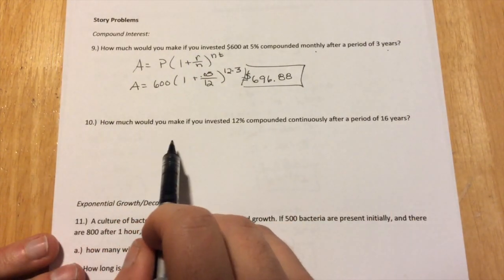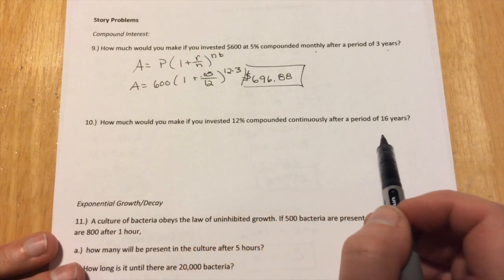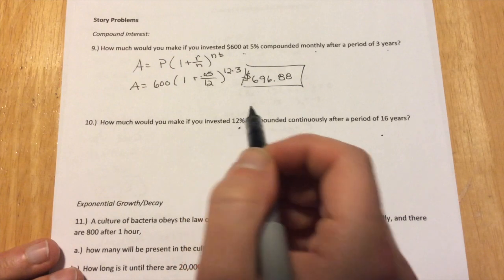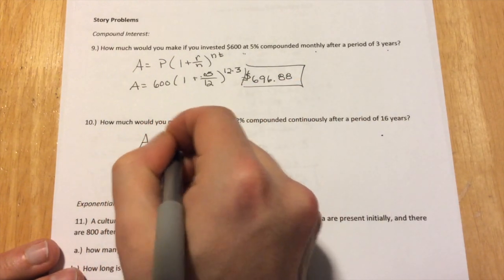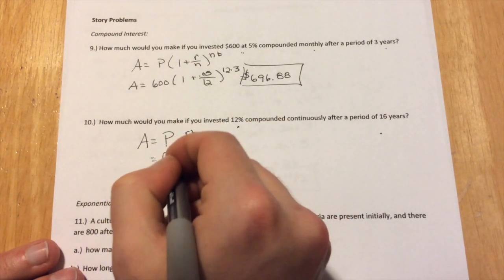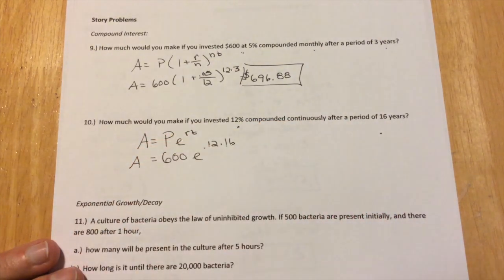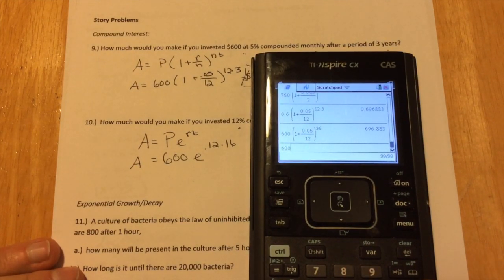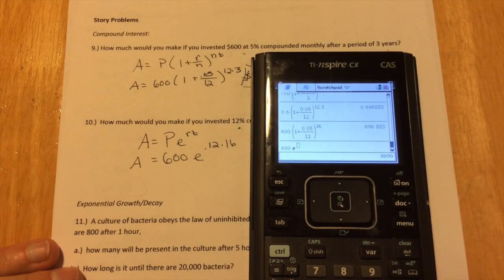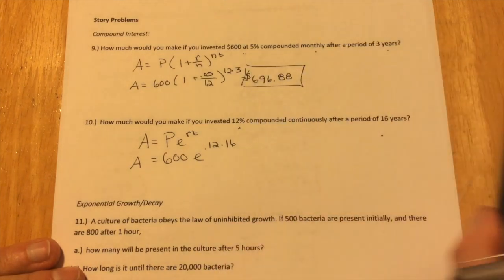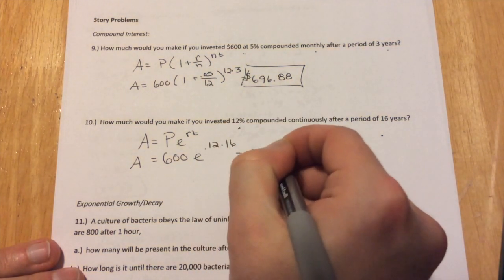Second one. How much would you make if you were invested 12% compounded continuously after a period of 16 years? So this is using the same $600 only where it's compounded continuously at 12%. So continuous is A equals PE to the RT. The principal is still 600. E to the .12 times 16. So again, take out the calculator. 600 times E to the .12 times 16. So that $600 compounded continuously over 16 years turns into $4,092.58.